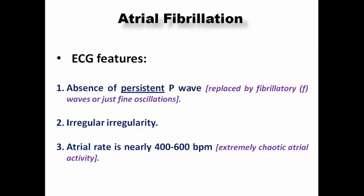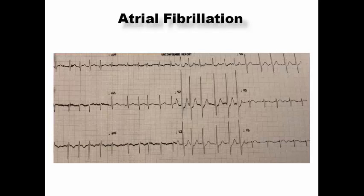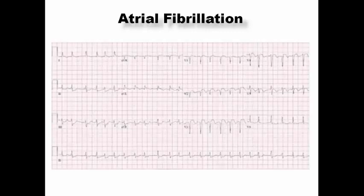In this ECG example, AF with rapid ventricular rate is present, with upsloping ST depression in V1 through V4 suggesting underlying myocardial ischemia or non-STEMI. In another example, the patient has AF — irregular irregularity with absence of persistent P waves — but also ST elevation in V1 through V4, representing anterior STEMI complicated by AF with rapid ventricular response.